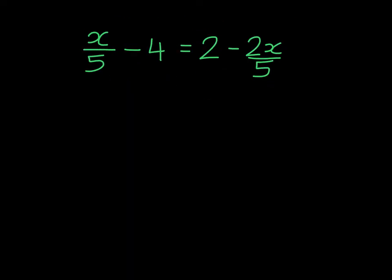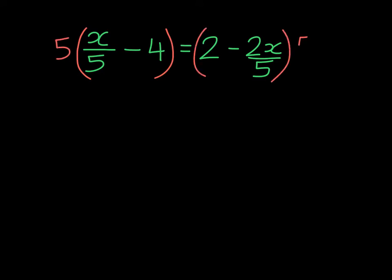In our second example, we have annoying denominators that are 5. So you guessed it — we're going to multiply both sides by 5. Being careful to multiply each term, each ingredient. It's the distributive property.